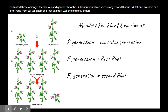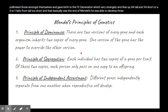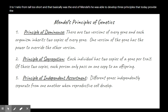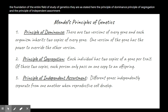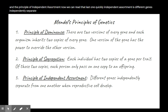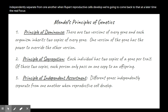From that experiment, Mendel was able to develop three principles that today provide the foundation of the entire field of genetics. They are: the principle of dominance, the principle of segregation, and the principle of independent assortment. Independent assortment means that different genes independently separate from one another when reproductive cells develop — we'll come back to that later. The real focus today is the first two: the principle of dominance and the principle of segregation.